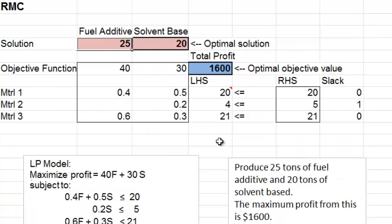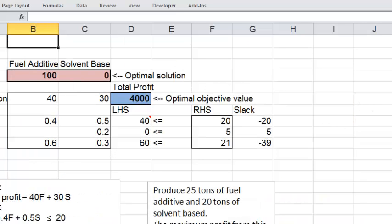Let's try. Maybe make 100 tons of fuel additive and no solvent base. Is this possible with the available materials? No, I don't think so. Here we are saying material 3, we need to use 60, but we only have 21, for instance, and also we could see that we have some negative slack values. So I'll just undo this part.